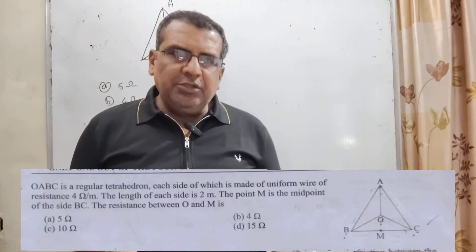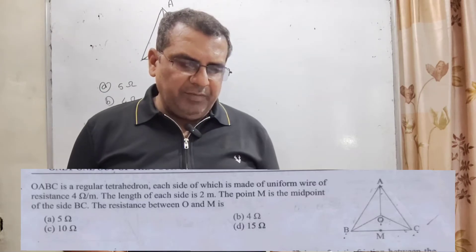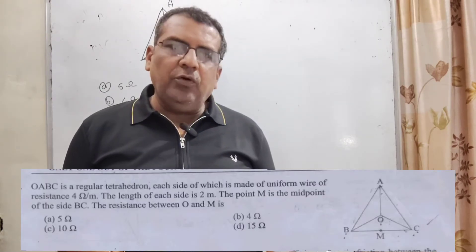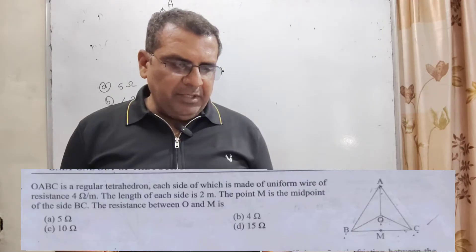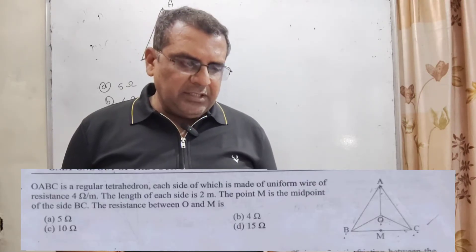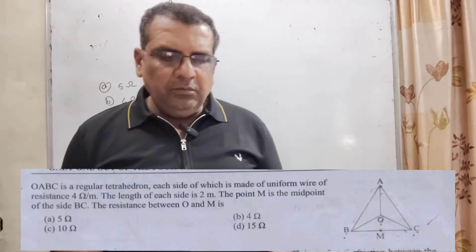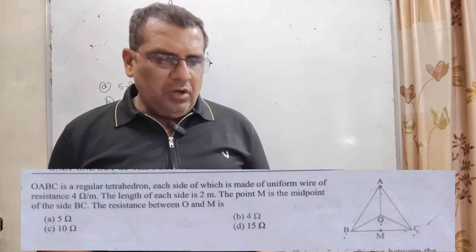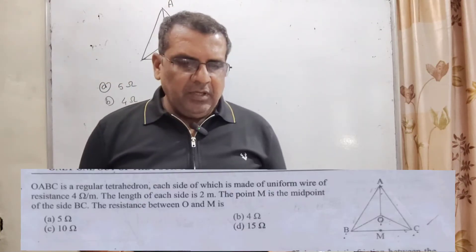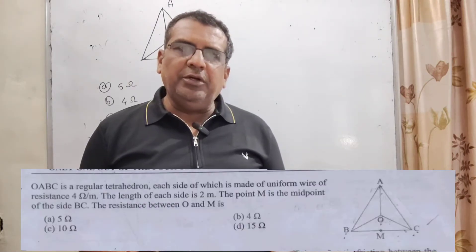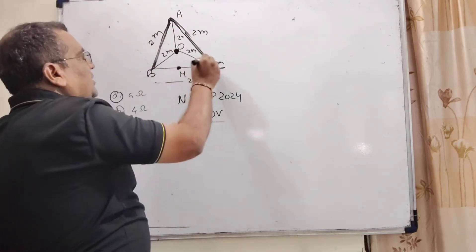Here is the question: OABC is a regular tetrahedron, each side of which is made of uniform wire of resistance 4 ohm per meter. The length of each side is 2 meters. Point M is the midpoint of side BC. The resistance between O and M is — options are: A) 5 ohm, B) 4 ohm, C) 10 ohm, D) 15 ohm. This question was asked in the NSEP exam 2024, on 24th November.